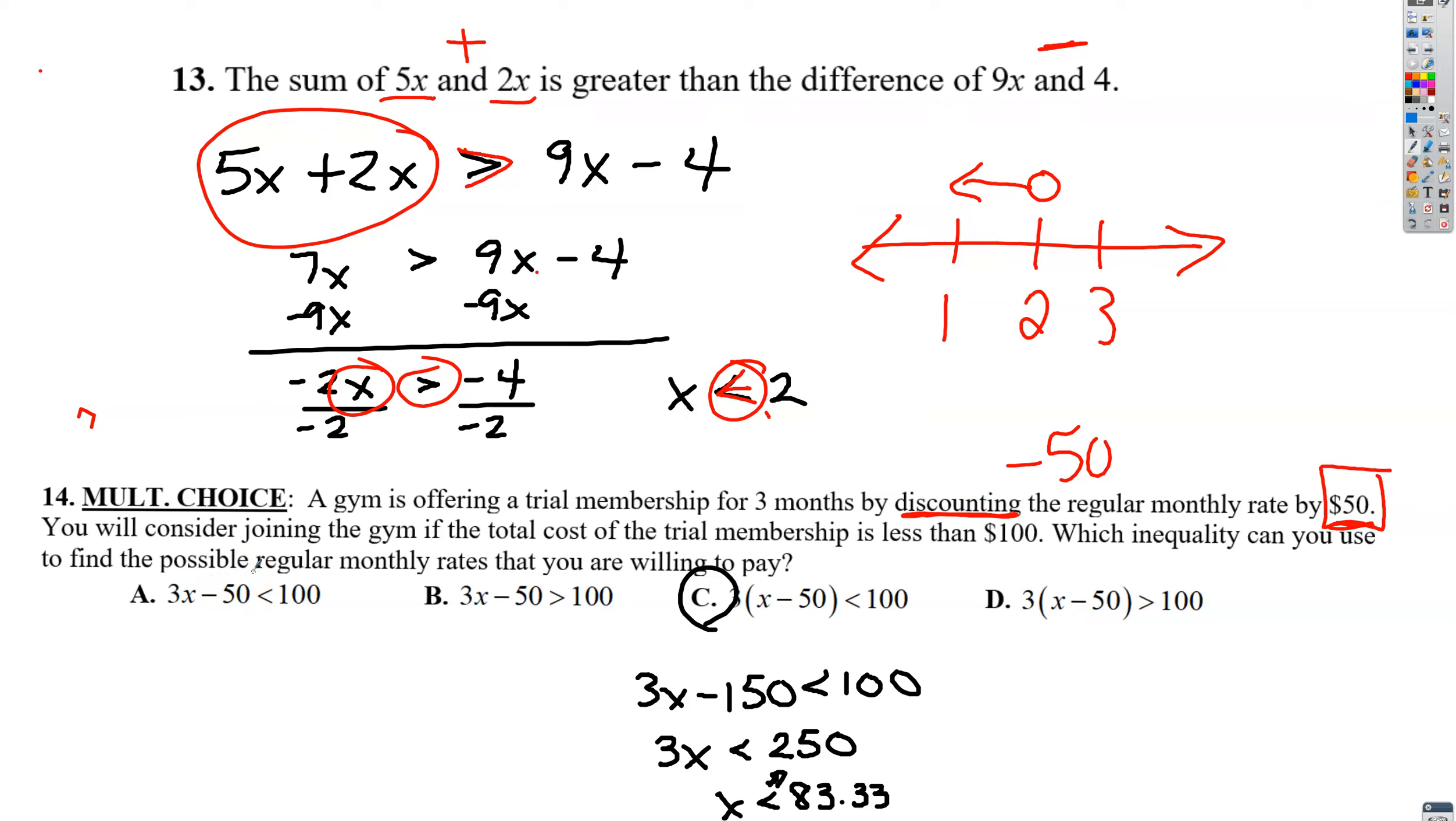This one is saying that you're only taking away 50 once. The three is not being multiplied by the 50, so that's no good because it's only subtracting 50 once. Same with this one, only subtracting 50 once, so it's got to be either c or d.